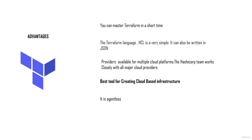The second advantage is HCL, the HashiCorp configuration language. This is a custom language used to build Terraform code. HCL is a very simple language to learn and it's much simpler than using JSON. You have the option of writing Terraform scripts in JSON, but HCL is a much better and more preferred language. The third advantage is that Terraform has providers for all major cloud platforms including GCP, AWS, and Azure.